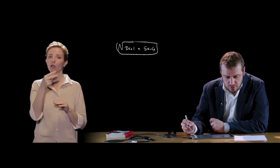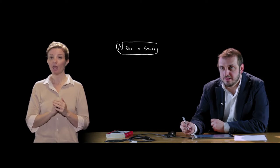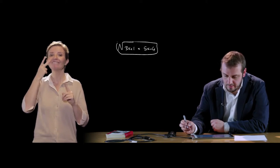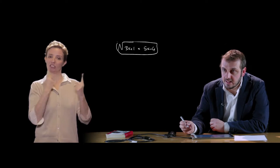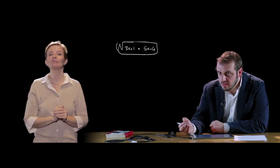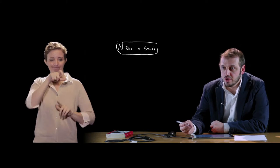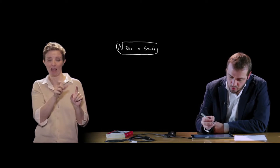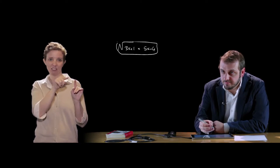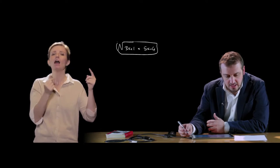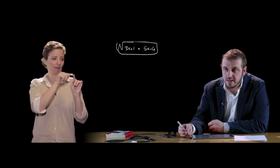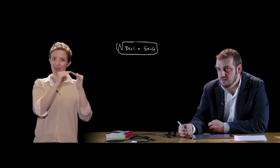Per risolvere delle equazioni irrazionali è necessario preliminarmente ricercare le condizioni di esistenza, che abbiamo già definito per quanto riguarda i radicali nella lezione dedicata. In particolare dobbiamo imporre che il radicando debba essere maggiore o uguale di 0 nel caso in cui la radice dove compare l'incognita è una radice di indice pari, e invece non abbiamo particolari condizioni da imporre se l'indice del radicale è un numero dispari.